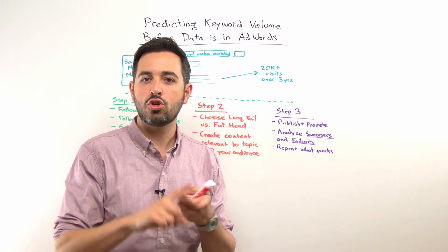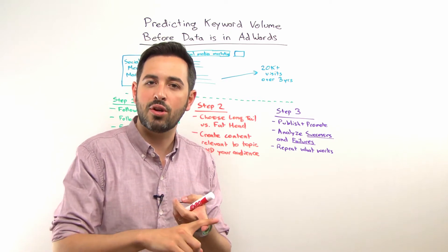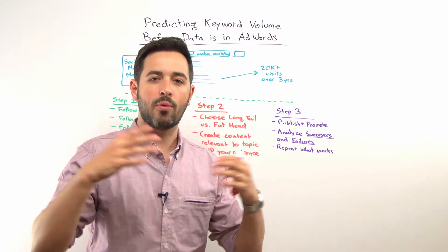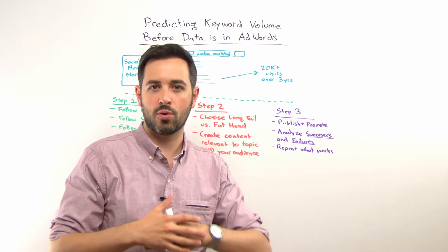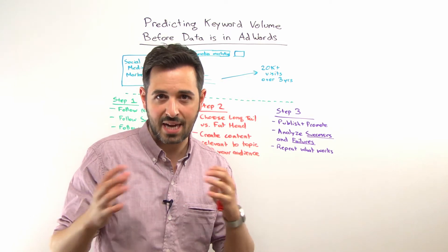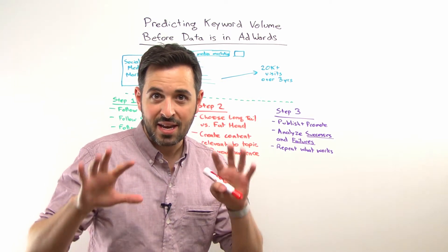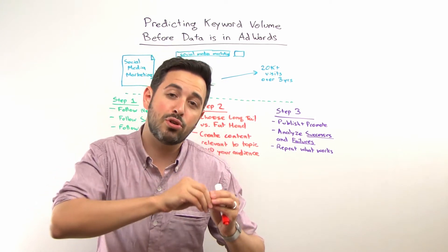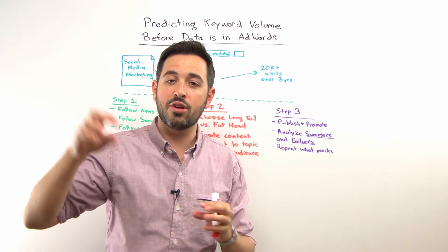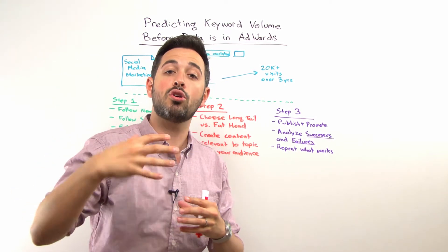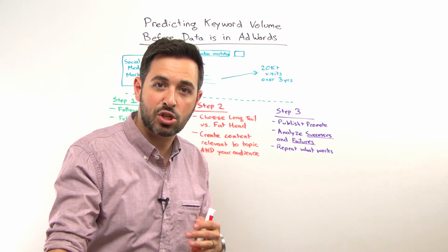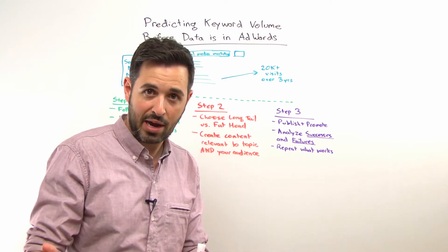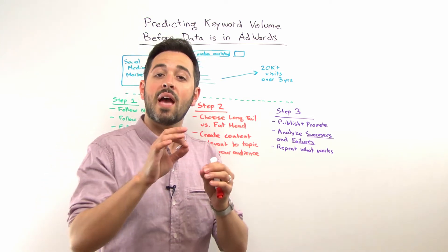Number one: trending keyword volume — keyword volume that happens in big spikes around events, news items, or topic matter — is very exciting and interesting because it can produce a lot of volume and it can turn what has been a content marketing strategy into a thought leadership strategy.